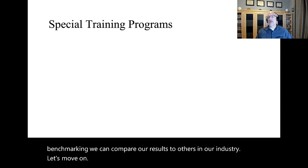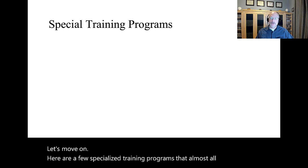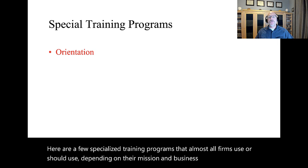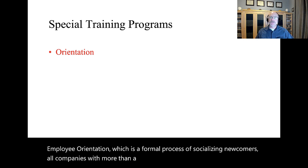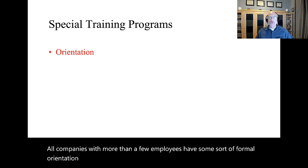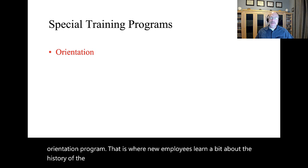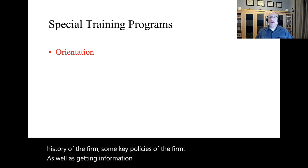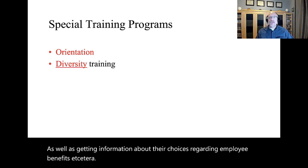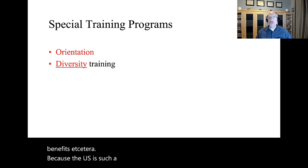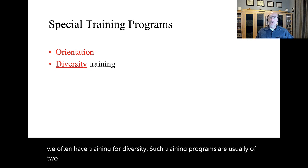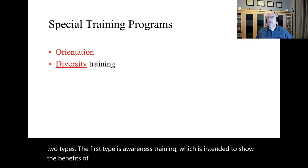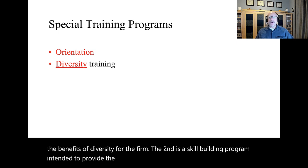Here are a few specialized training programs that almost all firms use or should use depending on their mission and business focus. The first is new employee orientation, which is a formal process of socializing newcomers. All companies with more than a few employees have some sort of formal orientation program where new employees learn about the history of the firm, some key policies, as well as getting information about employee benefits. Because the U.S. is such a heterogeneous nation, we often have training for diversity. Such training programs are usually of two types: awareness training, which is intended to show the benefits of diversity for the firm, and a skill-building program intended to provide the KSAOs for working with people who are different.